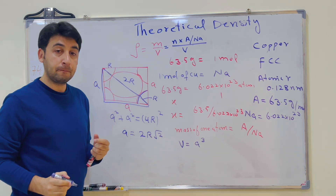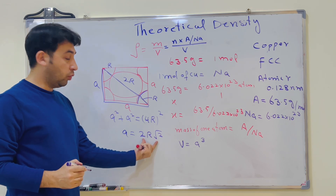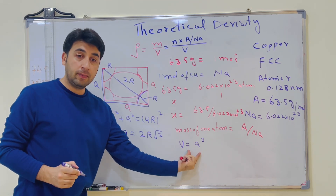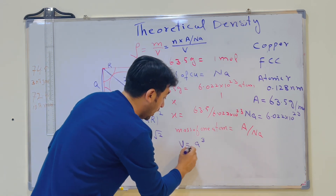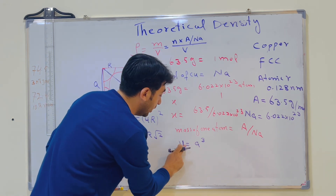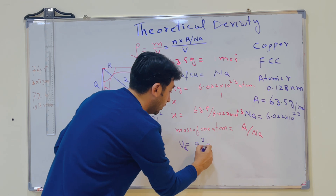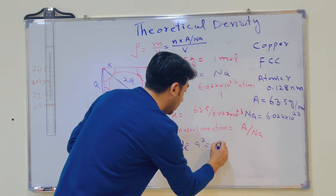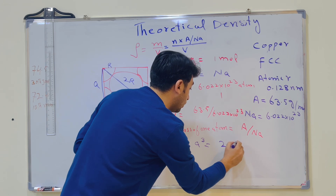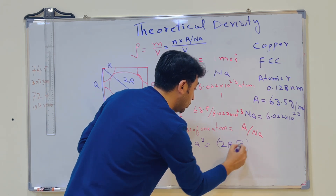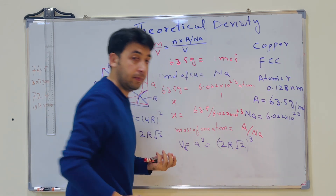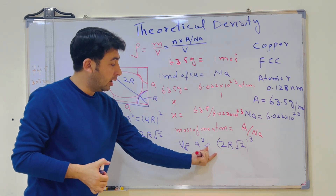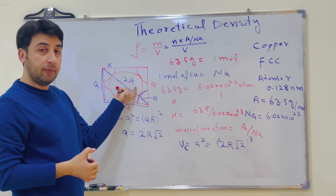So a = 2r√2. The volume of the FCC unit cell, Vc, equals a³. Substituting a, we write Vc = (2r√2)³. This is the volume of the FCC unit cell expressed in terms of the atomic radius r.